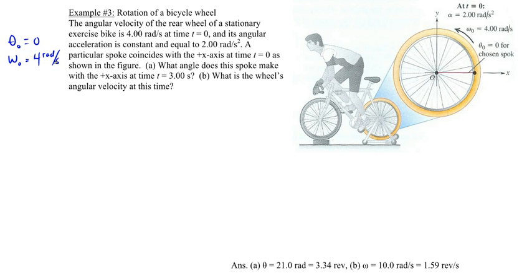And then it continues to accelerate at a constant rate. The angular acceleration, which we represent with alpha, is two rads per second squared. And we're asked to find out when we look at it some later point in time, three seconds, where is this spoke? How much angle has it made with respect to the original positive x-axis to the right? And then part b, what is its angular velocity at that particular point in time? So t is three seconds. So this is all of our given information.